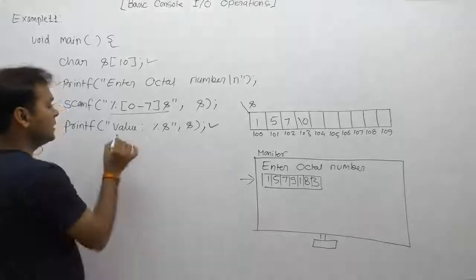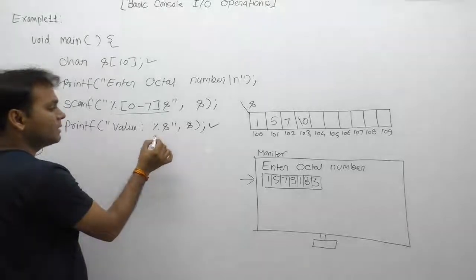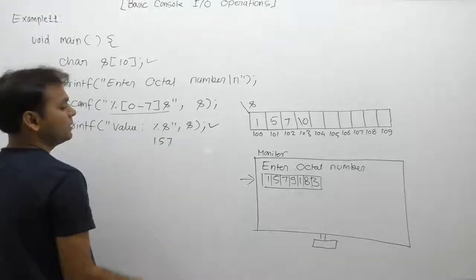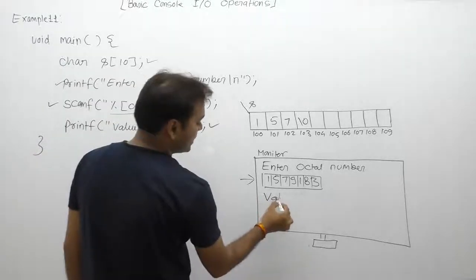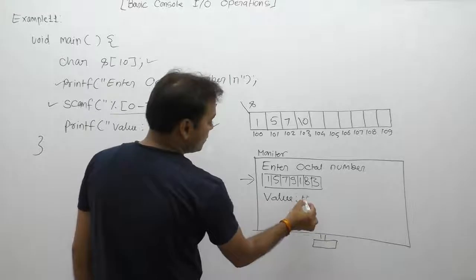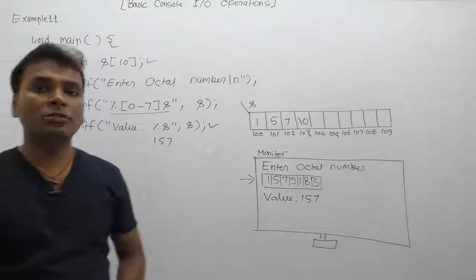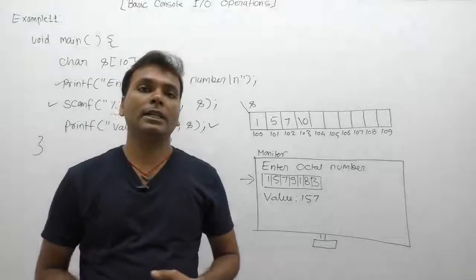Then next time we have to display the value of s using printf. Percent s will be replaced by the value of s, which is 157. Therefore final output is displayed as value 157. This type of required input validation is possible by using scanf functions.